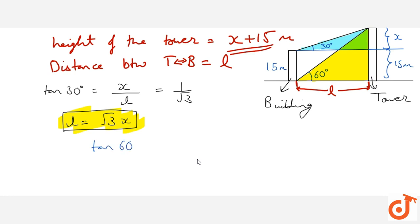Tan 60 degree is equal to root 3. We know this value. It is equal to x plus 15 is height upon length. So, this will come to us: root 3 times length is x plus 15.